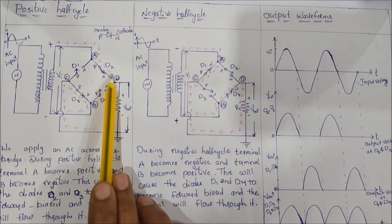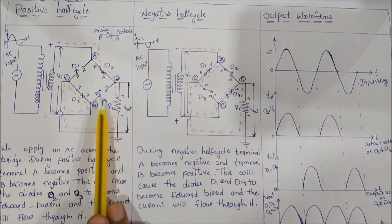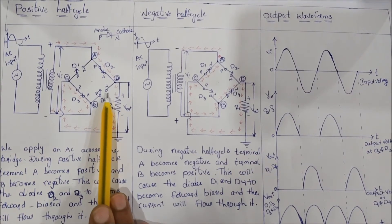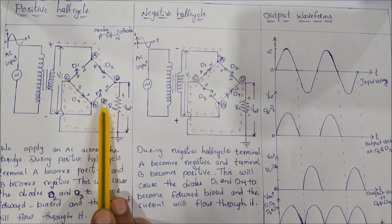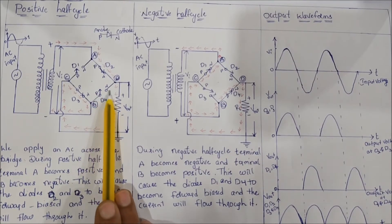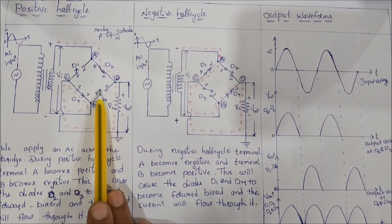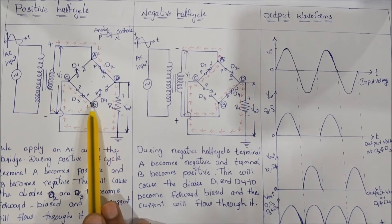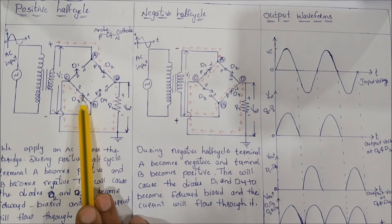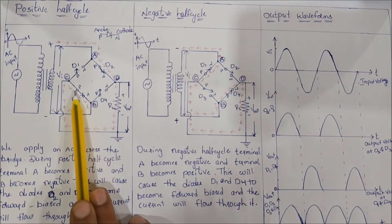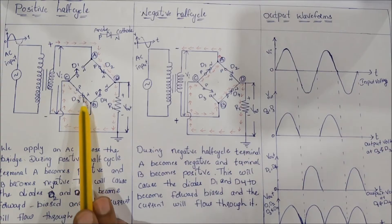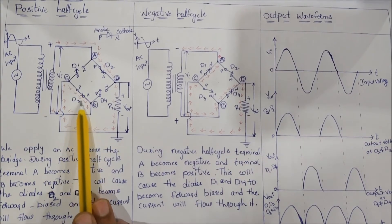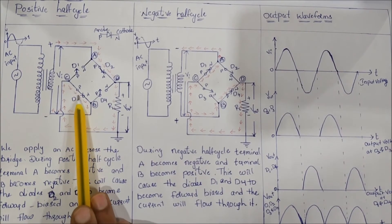Current flows here. At terminal D, we have D4 - D4's negative terminal is connected, so D4 is reverse biased and represented as an open switch. Terminal B is negative. Current flows through the load resistance, and D3 is forward biased, represented as a closed switch.